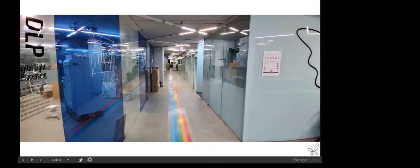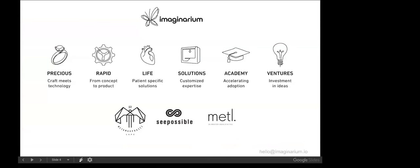While today is not an in-depth session on 3D printing, on the back of the work we're doing at Imaginarium, we've built a nice ecosystem that speaks to various experts. The company is divided into a few verticals: Imaginarium Precious goes deep into innovating in the field of jewelry, art, and sculpture; Imaginarium Rapid is hardcore product design and engineering; and Imaginarium Life covers biomedical applications — everything to do with saving lives through customization and personalization, so on and so forth.